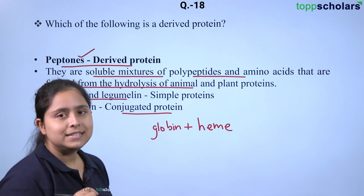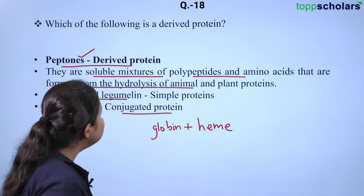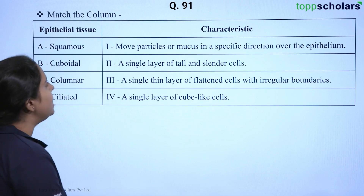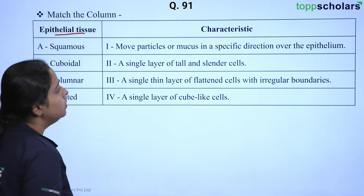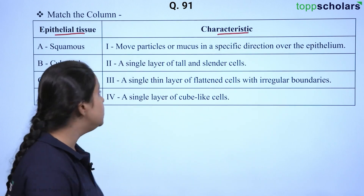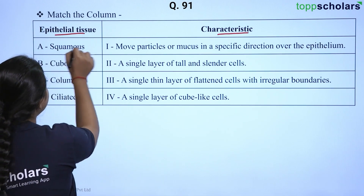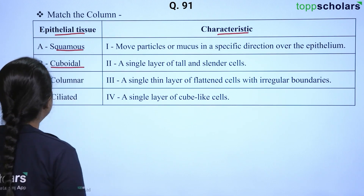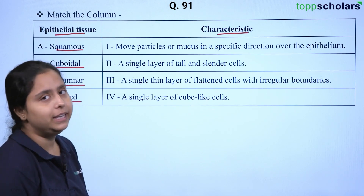You must remember all these details to answer potential questions in the actual examination. The correct answer for this question is option A. Next is a match-the-column type of question. In the first column we are provided with epithelial tissue, and the next column has the characteristic. We need to match the epithelial tissue with the correct characteristics. The types given are: squamous epithelium, cuboidal epithelial tissue, columnar epithelial tissue, and ciliated epithelial tissue.